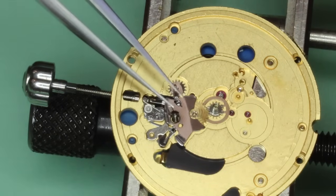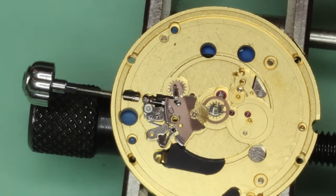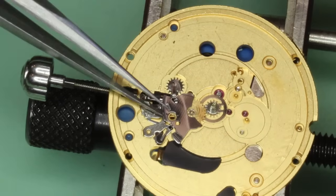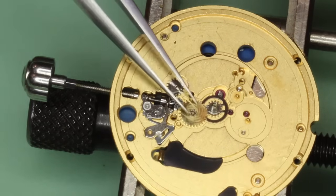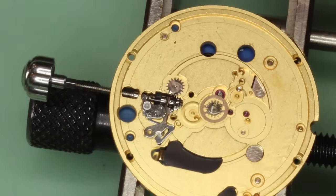This retaining plate covers the motion work and forms part of the calendar retaining as well, or calendar ring.